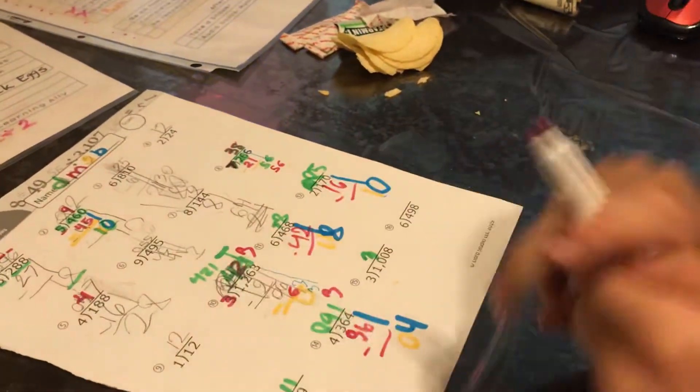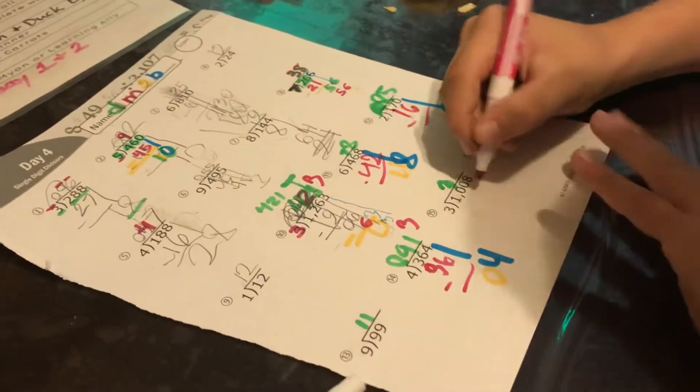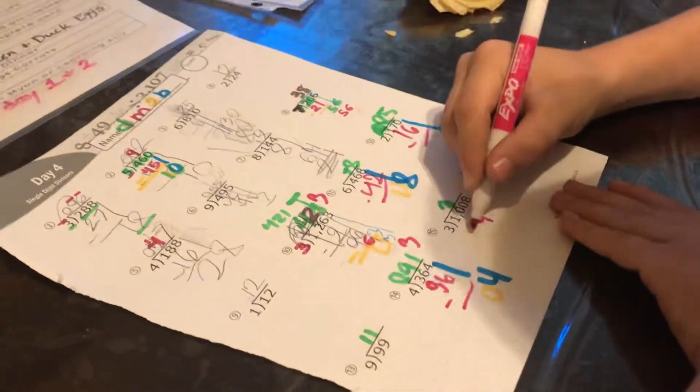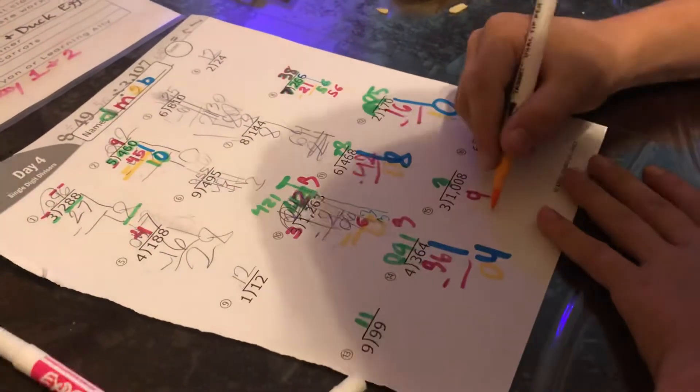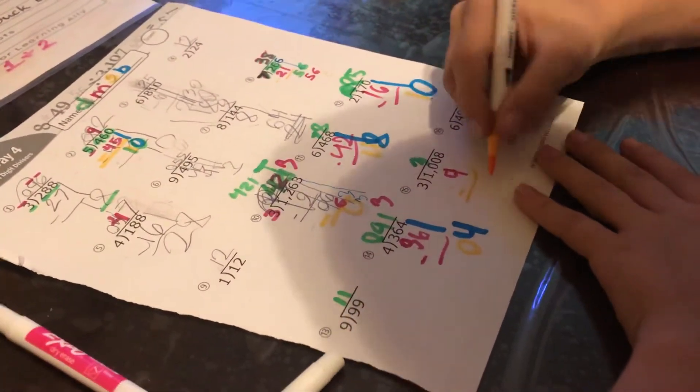So then you put that three right up here. Yes. Swap colors into multiply. Three times three equals nine. So then nine minus ten equals... zero? One.